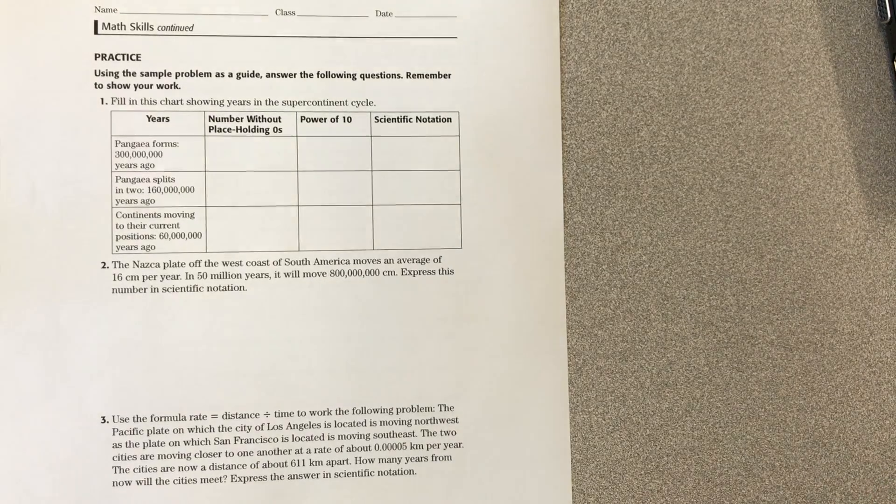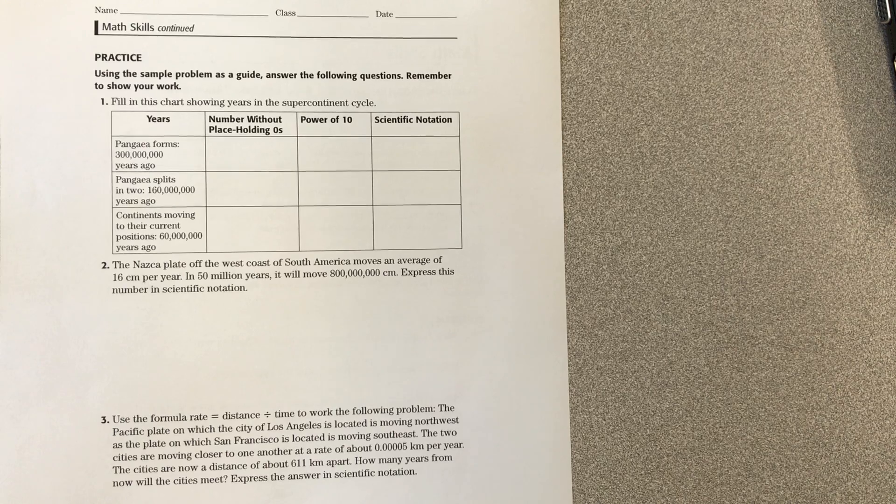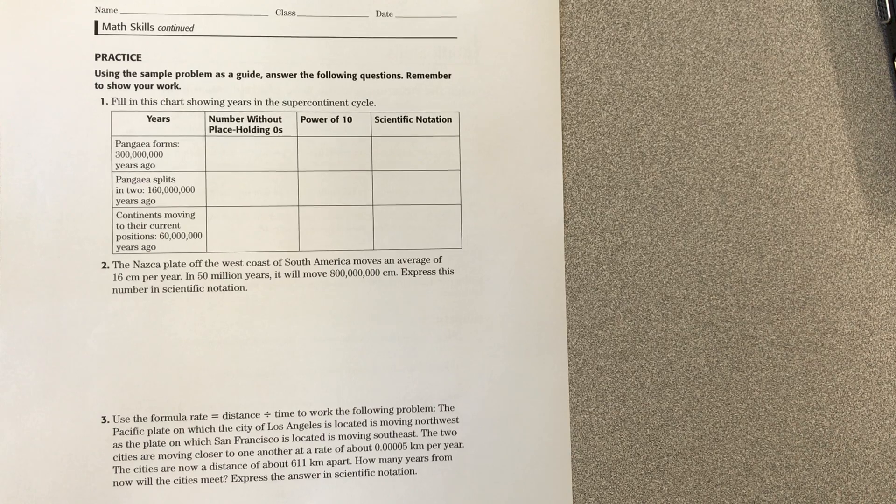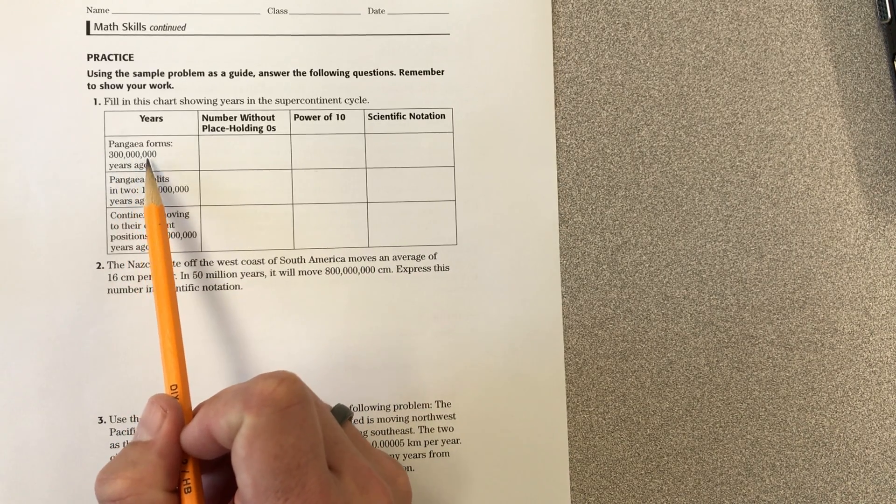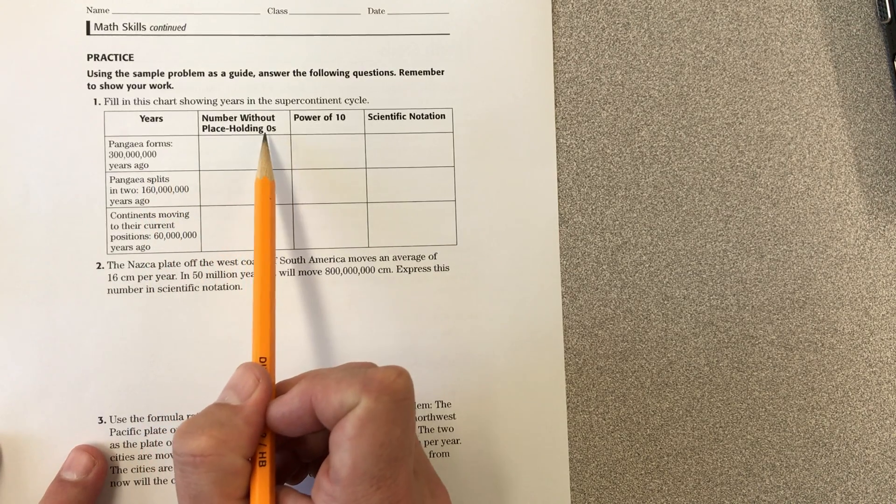First question: fill in this chart showing years in the supercontinent cycle. Again, we're talking about plate tectonics but dealing with scientific notation. The first part of this chart says Pangea formed 300 million years ago. Number without place holding zeros.